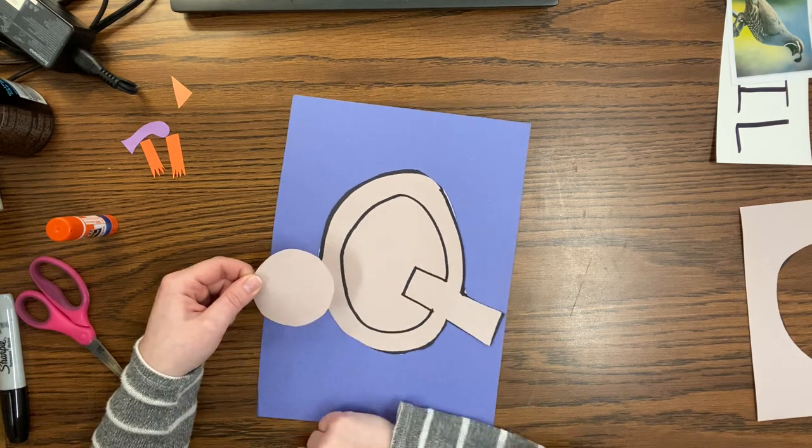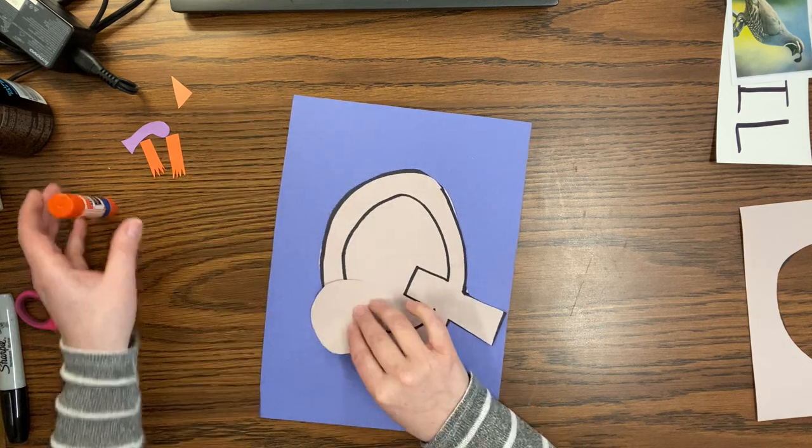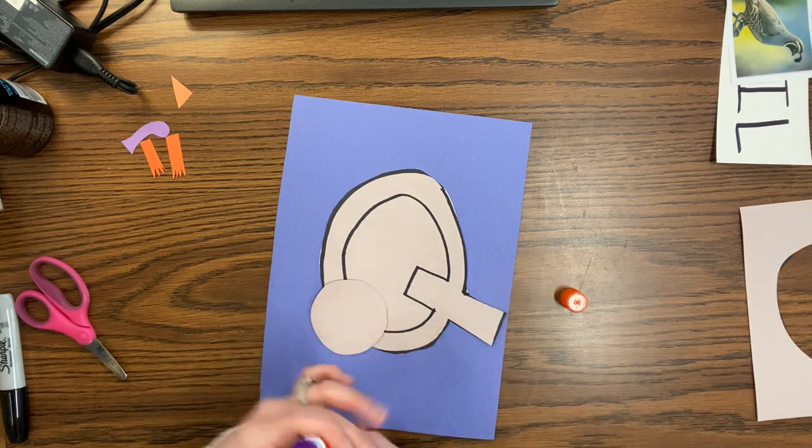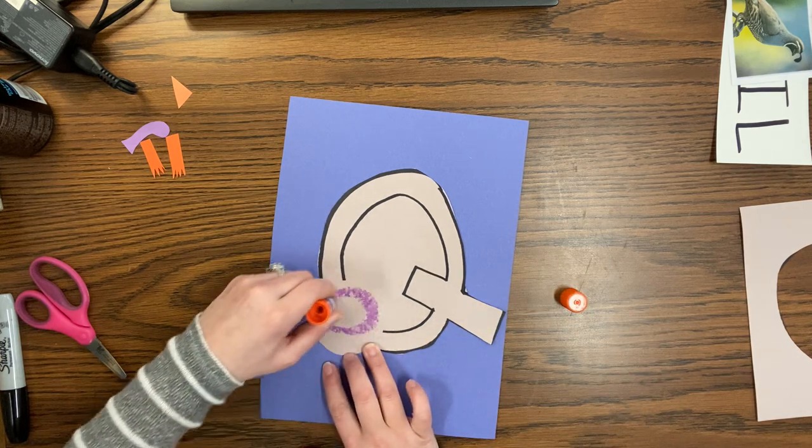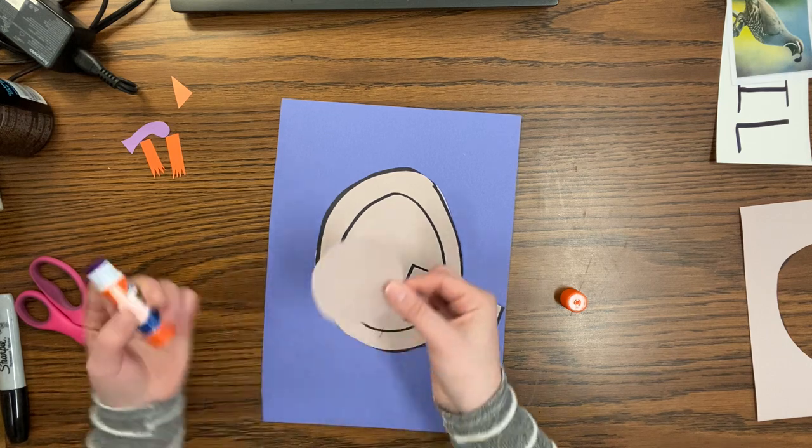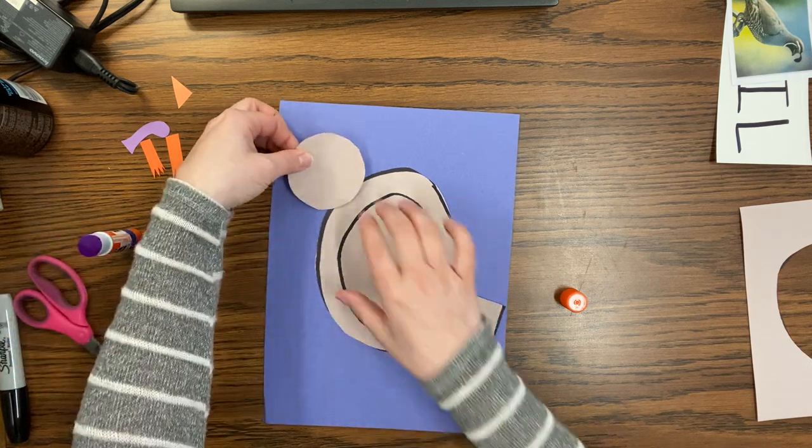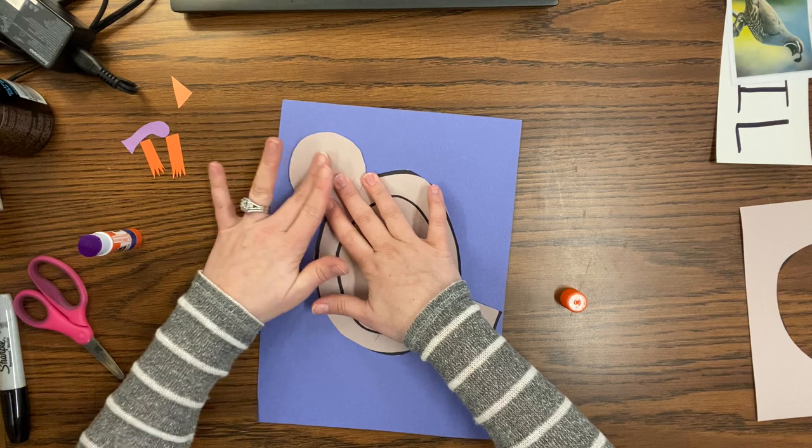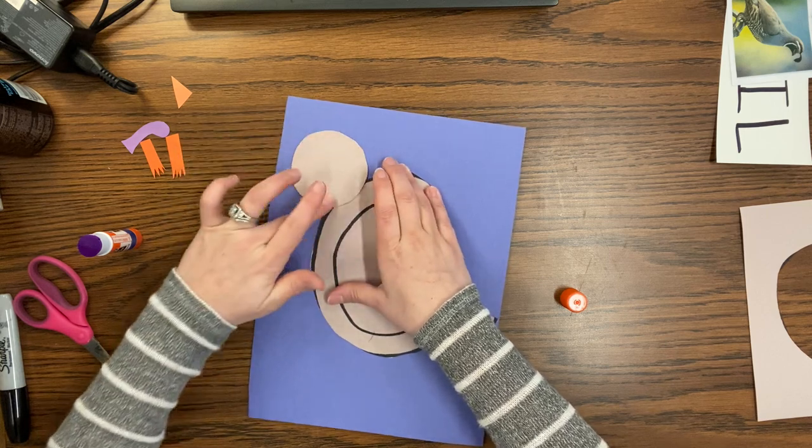It's like a tan color, huh? So then we're going to put glue on our circle. All over our circle. Okay. Then we're going to put our circle right up here.